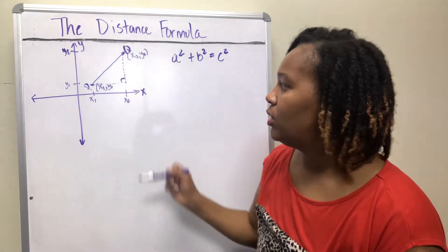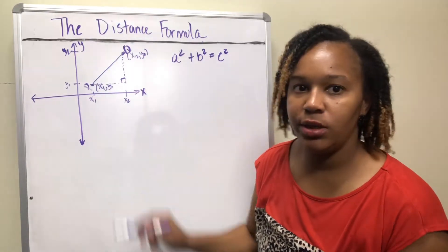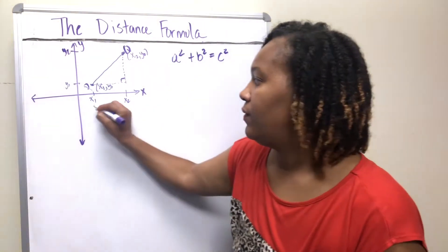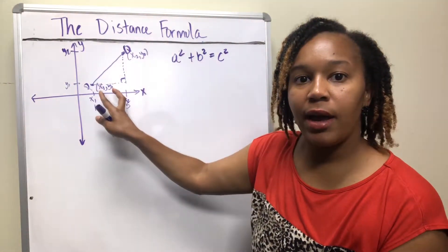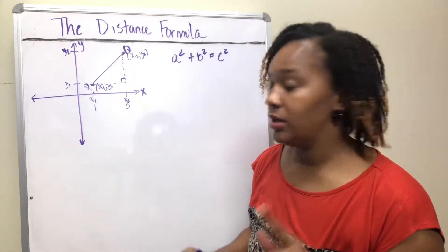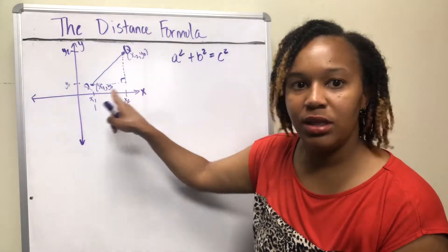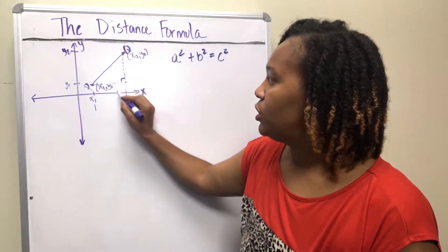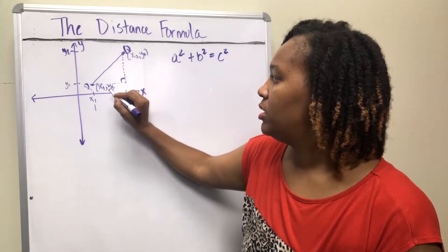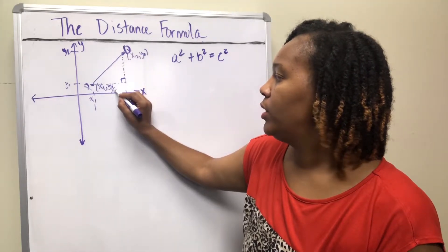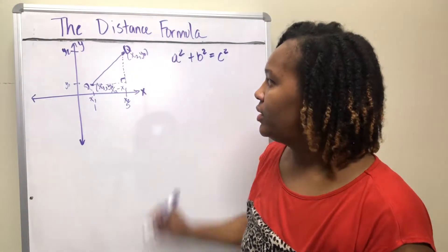How do we figure out the length of the horizontal side if we know x1 and x2? For example, if x1 is 1 and x2 is 5, the distance would be 4 — you do 5 minus 1. So you take the bigger x and subtract the smaller x from it. The length of that side is x2 minus x1.